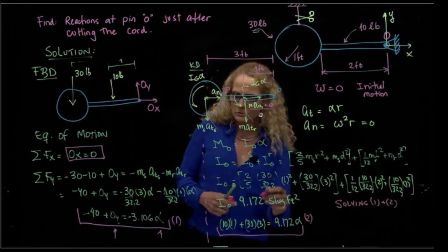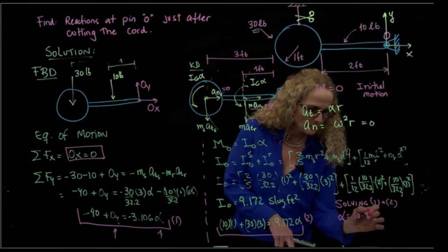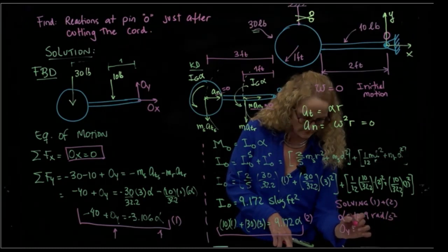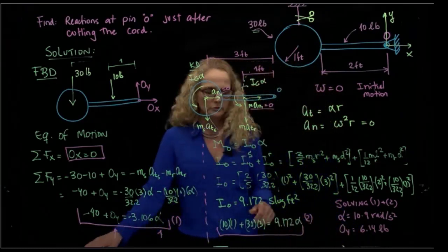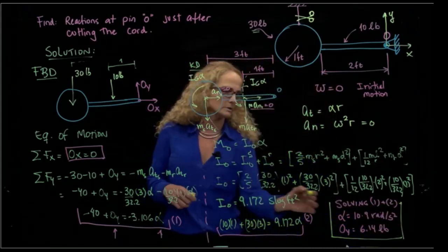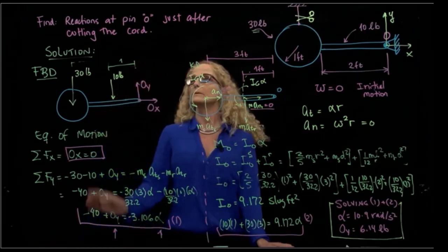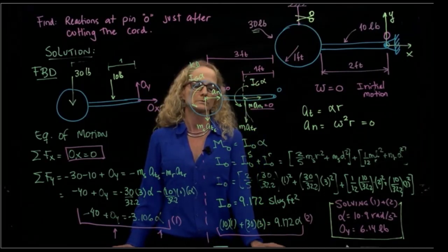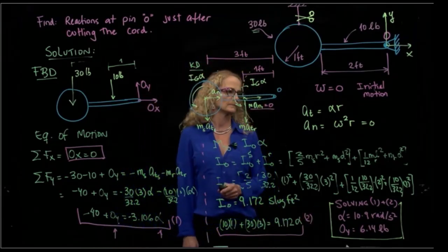Solving equations one and two, I can have the solution. Alpha equals 10.9 radians per second squared, and OY equals 6.14 pounds. This is my solution of the two forces. I have the other result from the beginning, which is OX. Those are the reactions at point O just after the cord was cut. You can also see the solution in the PowerPoint presentation. Thank you.